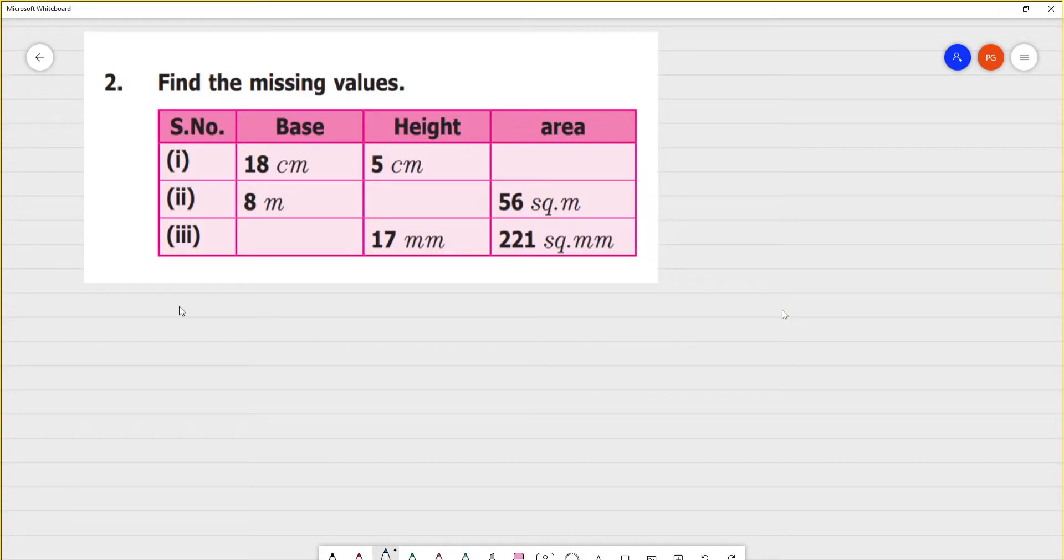Find the missing values. Area of the parallelogram. Area is equal to base multiplied by height.